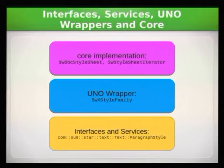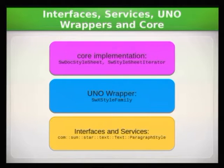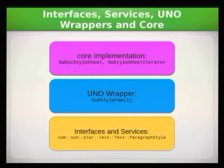So from the styles test, we see that the interfaces and services were something like com.sun.star.text.TextParagraphStyle, and the UNO wrapper is SwXStyleFamily — which is what we found out with callgrind. And when we debugged into it with GDB, we found that what this wrapper does inside the Writer core is using something like SwDoc, StyleSheet, and SwStyleSheetIterator. So if you have a bug, you now know where to look and how to debug into it.